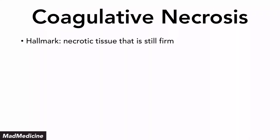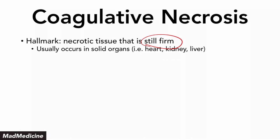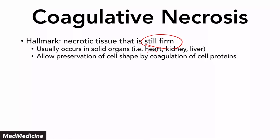Coagulative necrosis is when you're going to have necrotic tissue that is still firm — very important. This is usually happening because of some sort of thrombus or coagulation that's occurring, causing the cells to die off. This usually occurs in solid organs like the heart, the kidney, or the liver. What ends up happening in coagulative necrosis is that the cells are getting killed off because of a lack of perfusion, but the cell shape is going to actually be preserved because of the coagulation of the cell protein.